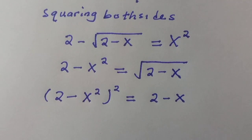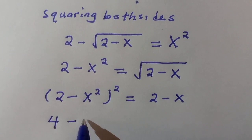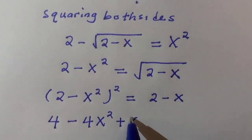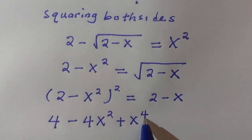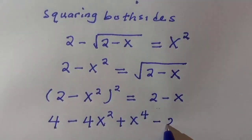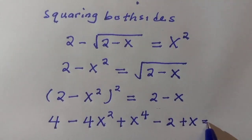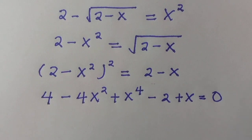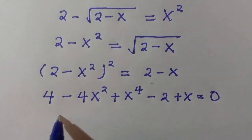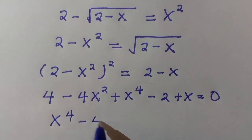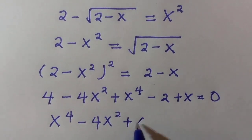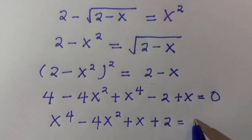Let's expand the left hand side: we get 4 minus 4x squared plus x to the power of 4, then minus 2 plus x equals 0. Rearranging, we have x to the power of 4 minus 4x squared plus x plus 2 equals 0.